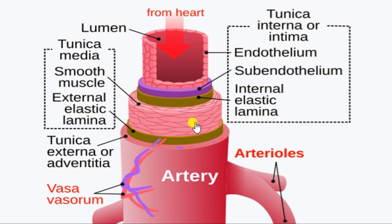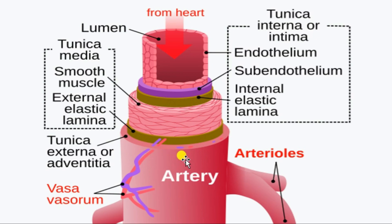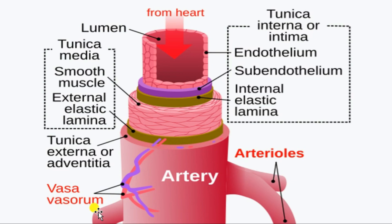The elastic tissue between the intima and media is the internal elastic lamina. The outermost layer after the media is the tunica adventitia, or externa, and the elastic tissue between the media and externa is the external elastic lamina. The network of channels that supply the large arteries is called the vasa vasorum, and the small tiny vessels that supply the peripheral nerves are called the vasa nervorum.